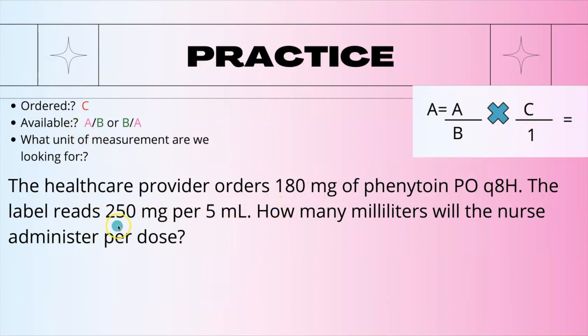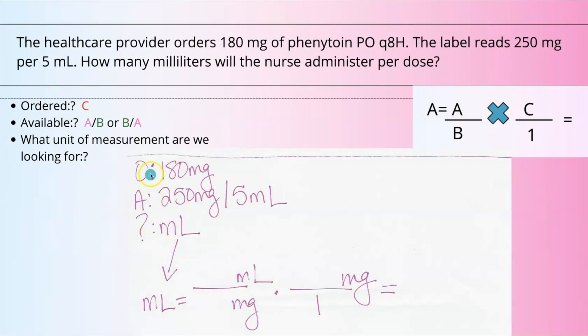What's available? 250 milligrams per 5 mL. It can go either way - 5 mL over 250 or 250 over 5. It all depends how we're setting this fraction up based on what unit of measurement we're looking for. What are we looking for? Milliliters. So milliliters goes in the A spot, and milliliters goes here.